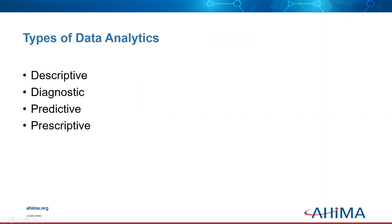There are different types of analytics. Descriptive analytics answers the question of what happened. Diagnostic analytics answers why did it happen. Predictive analytics answers what will happen. And prescriptive analytics answers how can we make it happen.